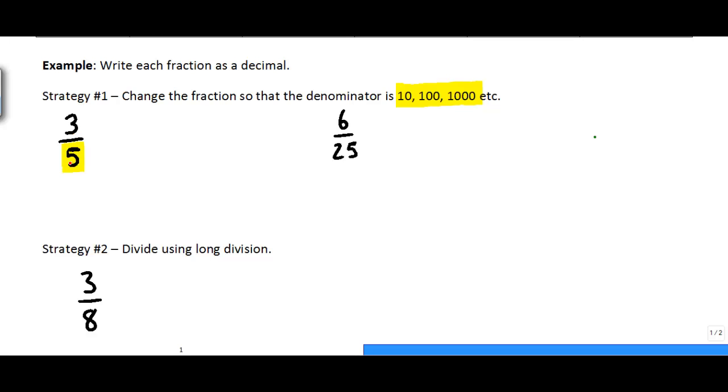So one thing we notice is 5, I can turn that into 10. The way I would do that is I would just multiply it by 2, which is fine as long as I do the exact same thing to the top of my fraction. So I end up with 3 times 2 is 6 over 10. Like we saw before, 6 over 10 is 6 tenths. So I'm just going to put 0 point and then a 6 in the 10th place. And then there's my answer.